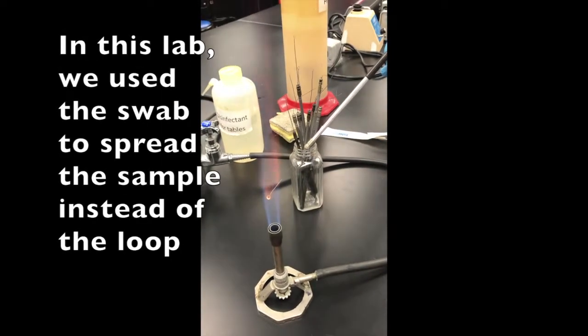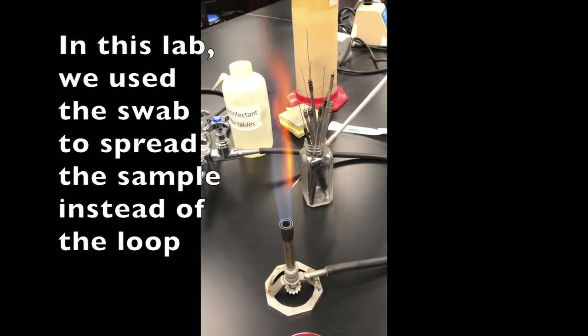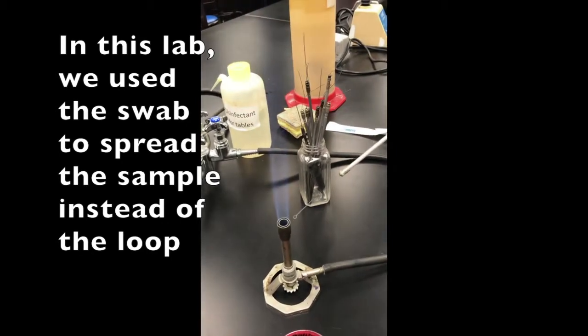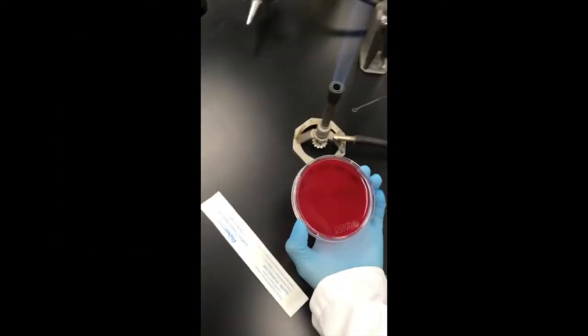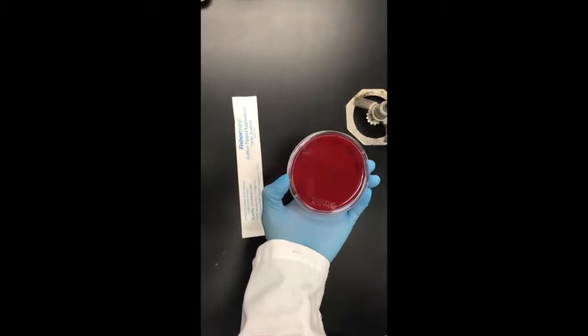So the reason why you want to streak with a loop after the swab is because some people will have more bacteria and some will have less. So if you have more, you're going to end up with a huge lawn of bacteria versus maybe some isolated colonies.